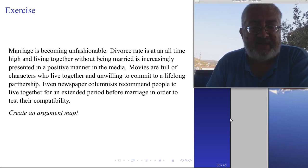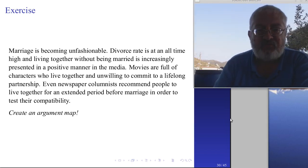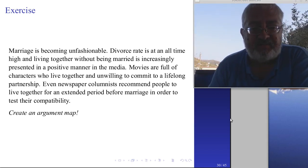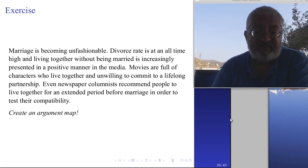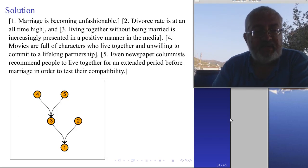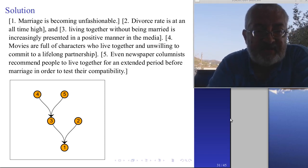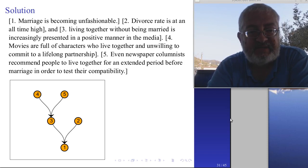Here is a longer one: 'When marriage is becoming unfashionable, divorce rate is at an all-time high, and living together without being married is increasingly presented in a positive manner in the media. Movies are full of characters who live together and are unwilling to commit to a lifelong partnership. Even newspaper columnists recommend people to live together for an extended period before marriage in order to test their compatibility.' Identify the conclusion, the premises, the intermediate conclusions, and draw a map. The solution: 'marriage is becoming unfashionable' is the ultimate conclusion. 'Divorce rate is at an all-time high' independently supports that conclusion. 'Living together without being married is increasingly presented positively in the media' is another independent premise, itself supported by statements four and five.